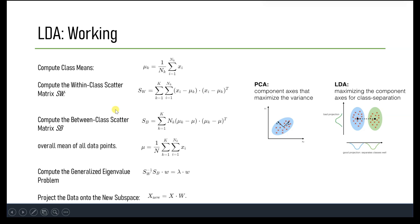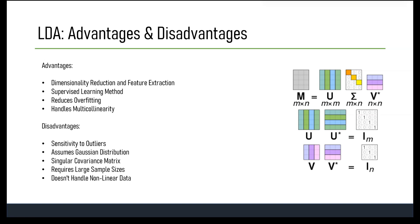Now let's look at the advantages and disadvantages of LDA. Advantages include dimensionality reduction and feature extraction — LDA preserves class discriminatory information while reducing dimensions and identifies the most discriminative features. It is a supervised learning method that takes class labels into account, making it suitable for classification tasks. It also helps reduce overfitting by transforming data into a lower-dimensional space.